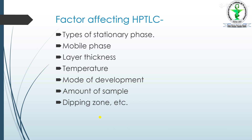Factors affecting HPTLC include: type of stationary phase, mobile phase composition, concentration and solubility of analytes, layer thickness, temperature (must be uniform and constant), area and direction of development (horizontal or one dimension — one dimension is mostly preferred), amount of sample (should be as small as possible, with bands preferred over spots for better peaks), and dipping zone.